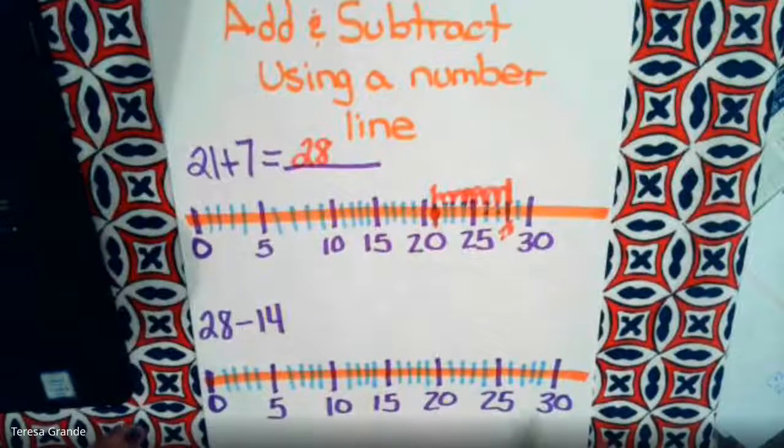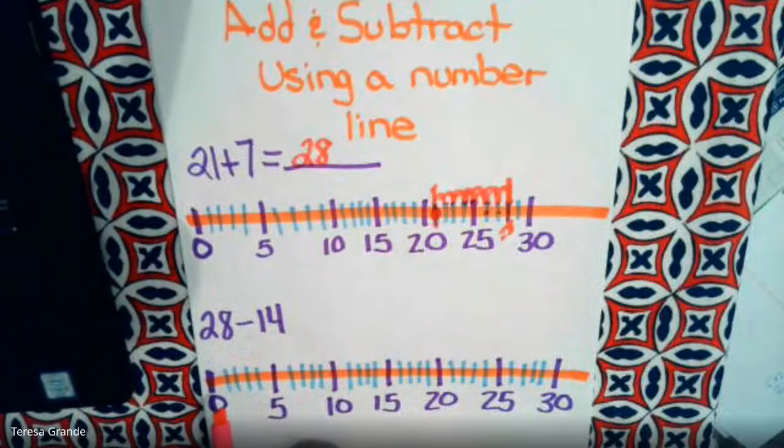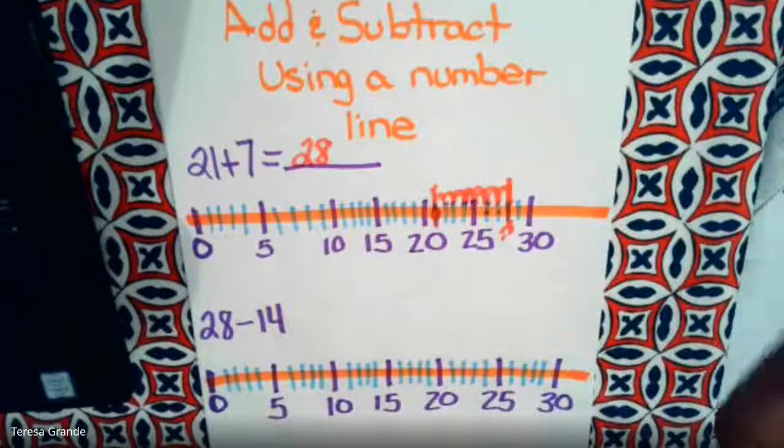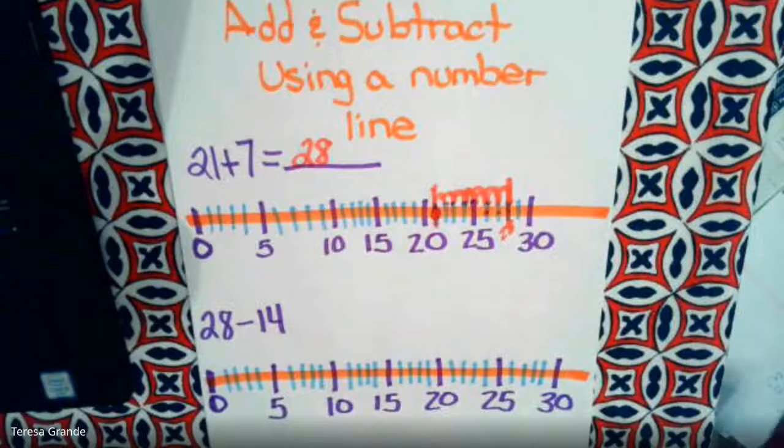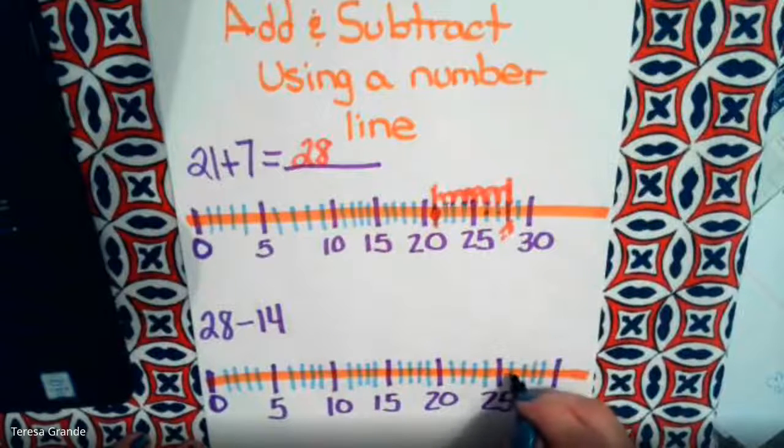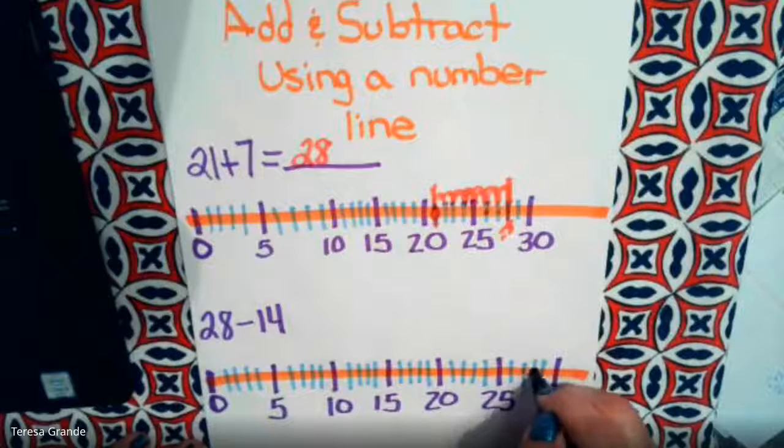The next problem is 28 minus 14. We need to find the number 28 first and I'm going to use a darker colored marker for this one so we can see it better. We're going to start at 28, so here's 25, we need to go three more: 26, 27, 28 is right here.